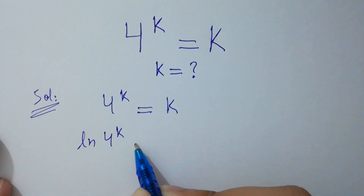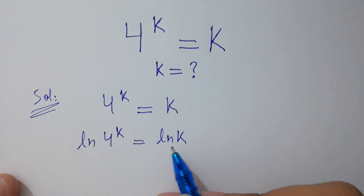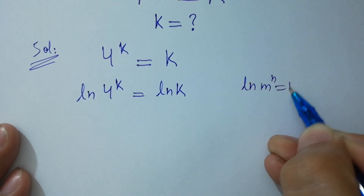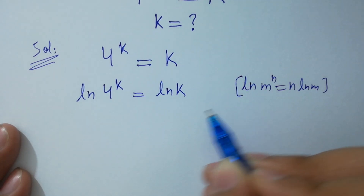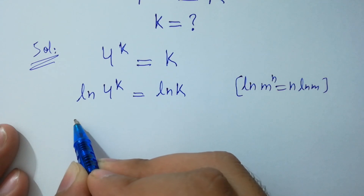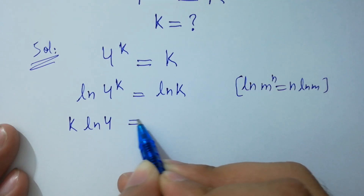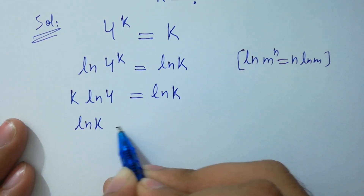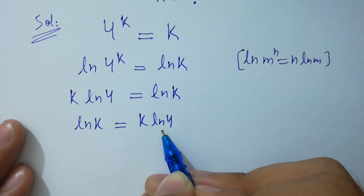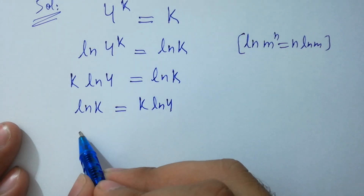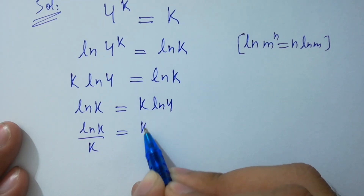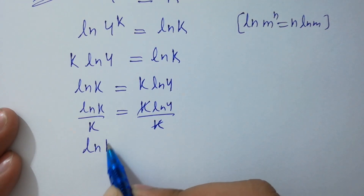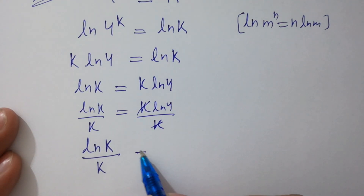Ln of 4 to the power k equals ln k. Since ln m to the power n equals n ln m, so ln 4 to the power k will be equal to k ln 4, equal to ln k. This is the same as ln k equal to k ln 4. Dividing both sides by k, we have ln k over k equal to ln 4.